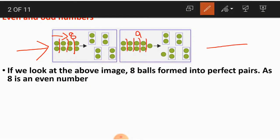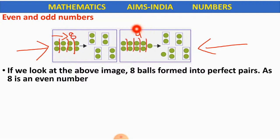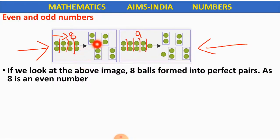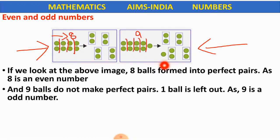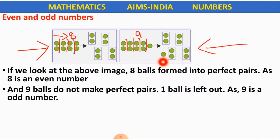When it comes to the image on the right side, there are 9 balls given. Even these 9 balls are divided into pairs, but 1 ball is remaining. This 1 ball is single — there is no other ball to form a pair. So 8 balls formed into perfect pairs, but these 9 balls did not make perfect pairs. 1 ball is left out.